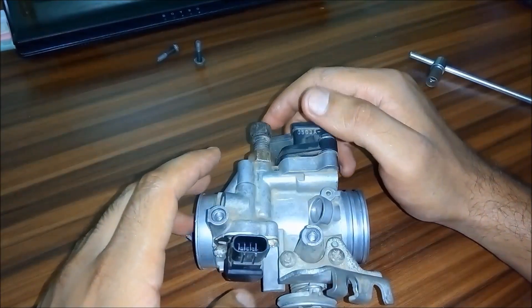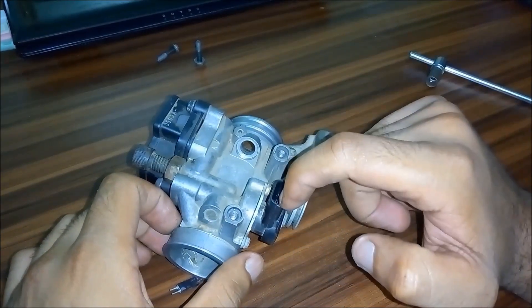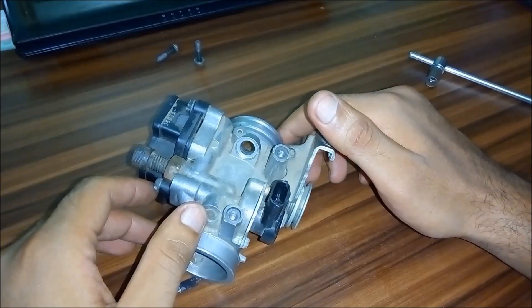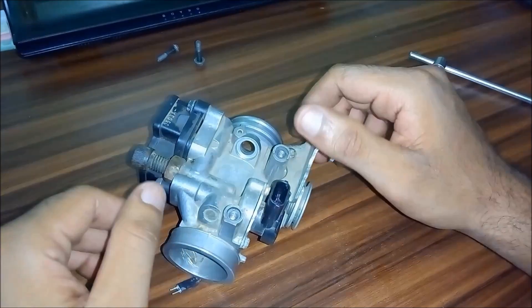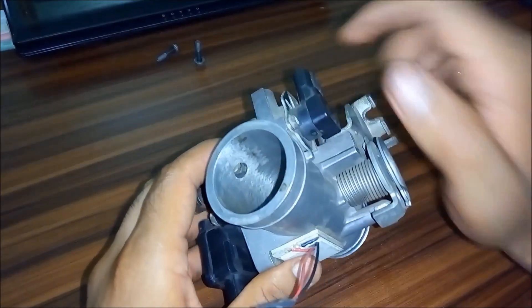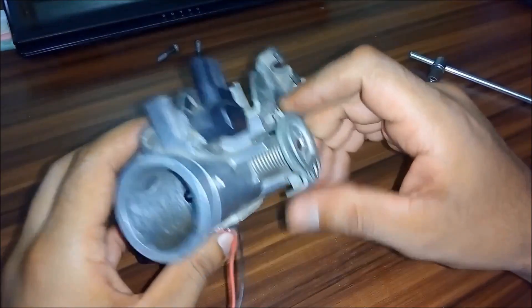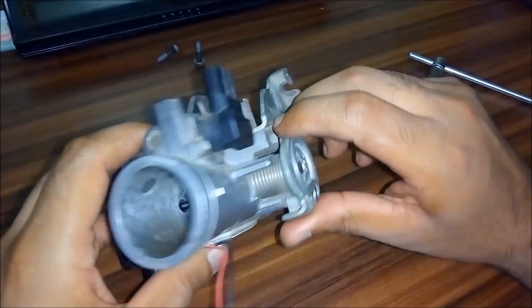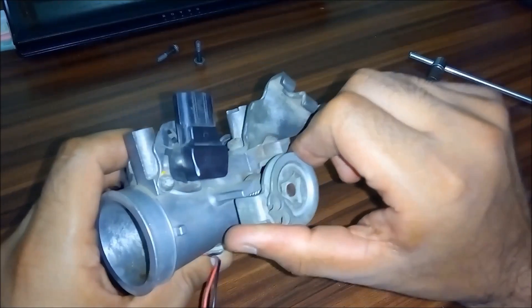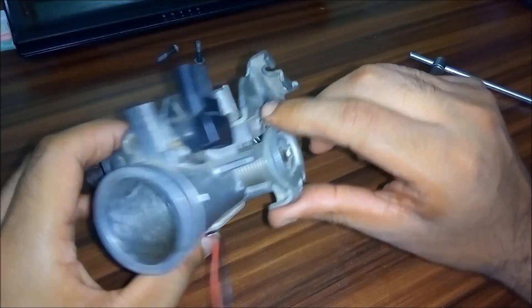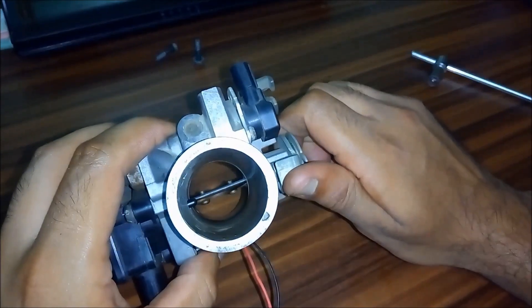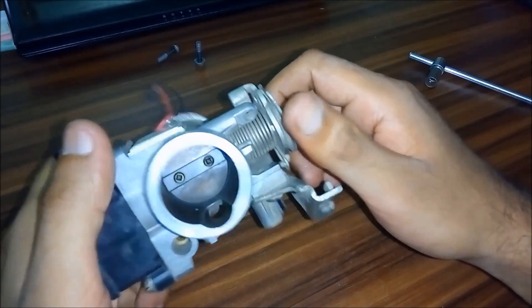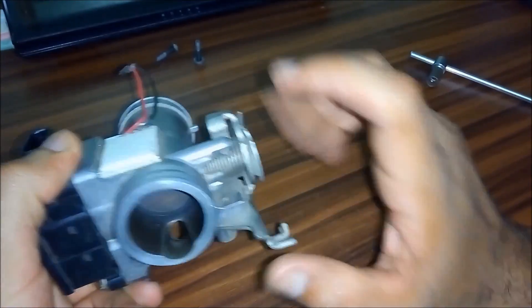Next we have this idle air control valve which controls the amount of air entering into your engine while the engine is idling. As you can see, when your throttle body throttle plate is in a fully closed position, this is what happens when you pull the throttle. You pull this lever and the throttle plate goes like this.